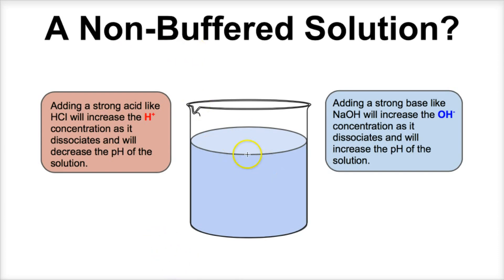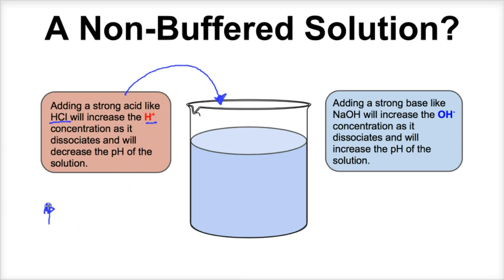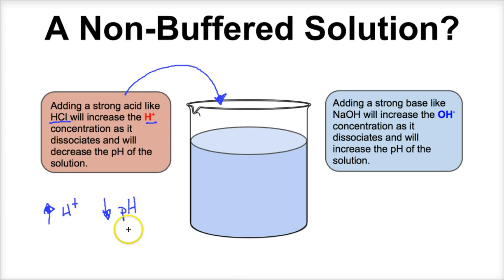Let's suppose we have some sort of solution here — this can be salt water, this can be sugar water, some sort of aqueous solution. If we add some hydrochloric acid to this, which is a strong acid, what's going to end up happening is we're going to have an increase in the concentration of H+ ions and therefore a decrease in the pH of this solution. By adding a strong acid like hydrochloric acid, we're going to increase the hydrogen ion concentration and therefore decrease the pH — it's going to become more acidic.